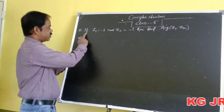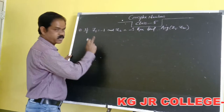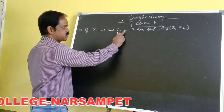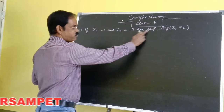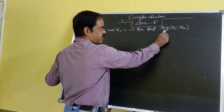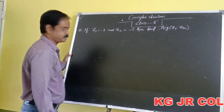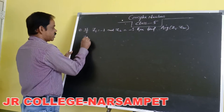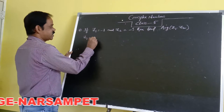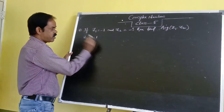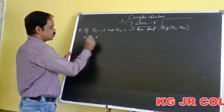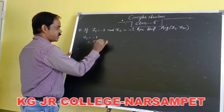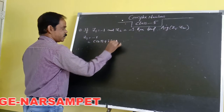First problem: given Z1 is equal to minus 1 and Z2 is equal to minus i, find the argument of Z1 into Z2. For Z1 equal to minus 1, the polar form of minus 1 is cos pi plus i into sin pi.